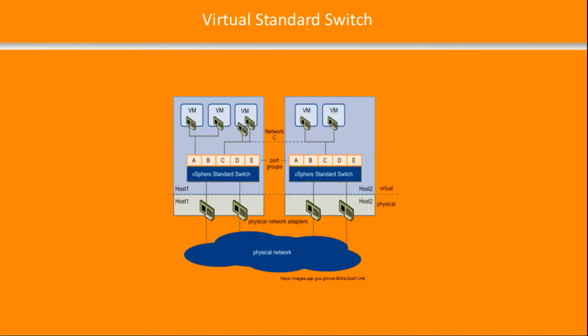This graphic shows two hosts. The key thing to note is that the virtual port groups are named A, B, C, D, and E, and they are exactly replicated on the other host. This allows a VM to migrate from one host to the other without losing connection. This is an important aspect of how a virtual standard switch is set up on each host, allowing a seamless migration as long as the port groups are set up exactly the same on each host.